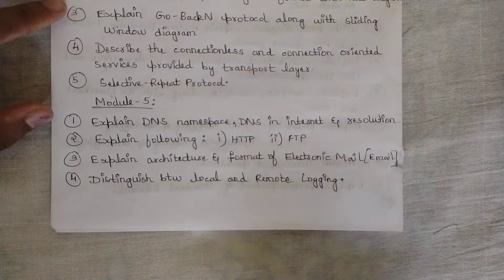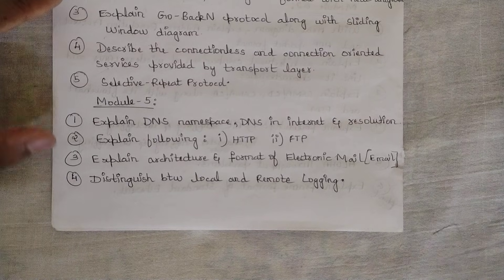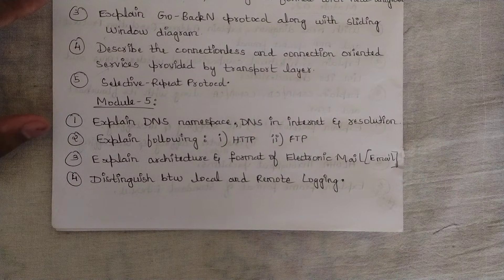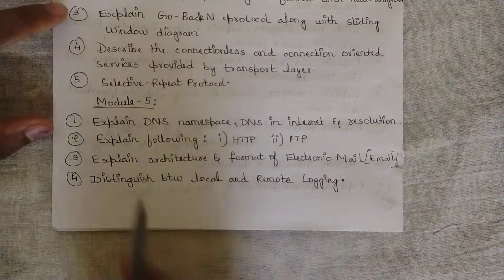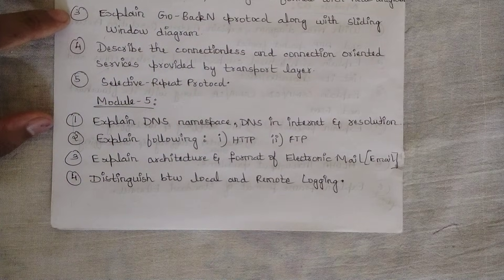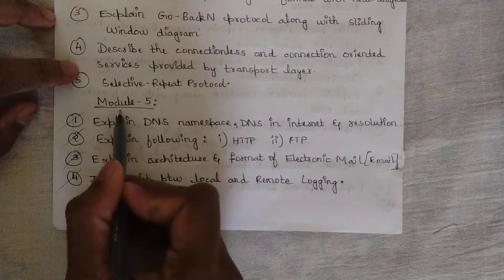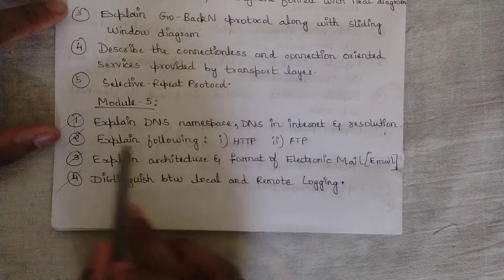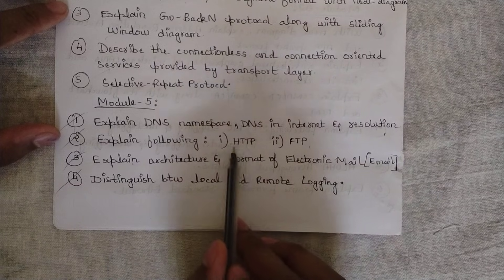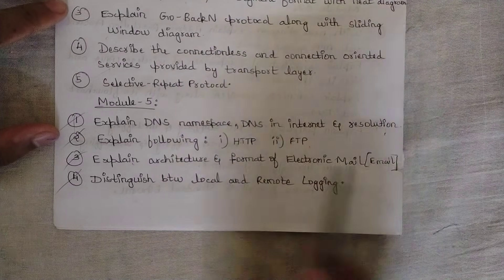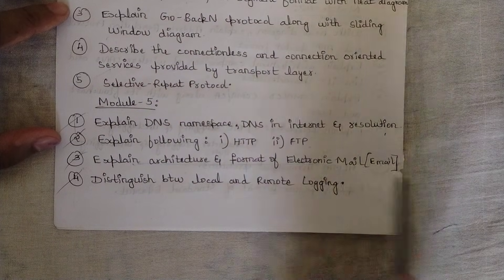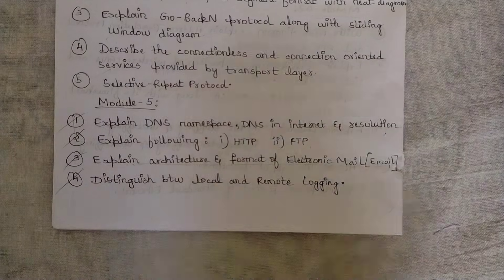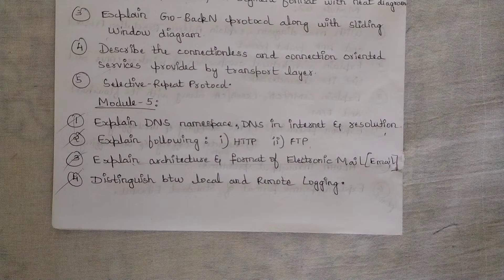Module 5 is the easiest module — only theory, nothing much, and you can attempt these questions easily. I've already shared the notes. Only four questions will be asked from Module 5, each for 10 marks: first, 'Explain DNS namespace, DNS in the internet, and resolution'; second, 'Explain HTTP (Hyper Text Transfer Protocol) and FTP (File Transfer Protocol)'; third, 'Explain the architecture and format of electronic mail (email)'; and fourth, 'Distinguish between local and remote login.' Study just these four and you'll definitely score in Module 5.